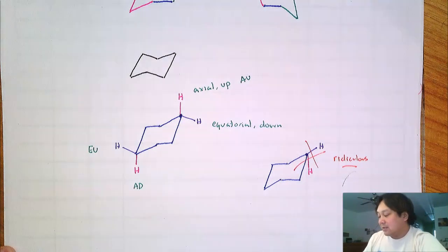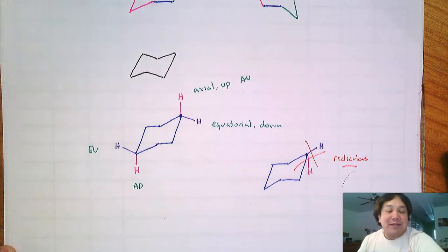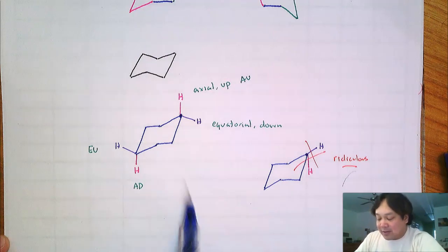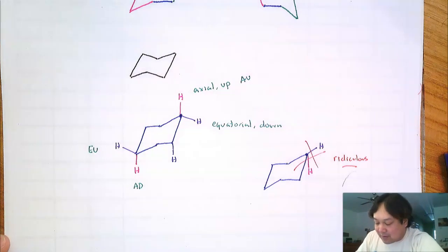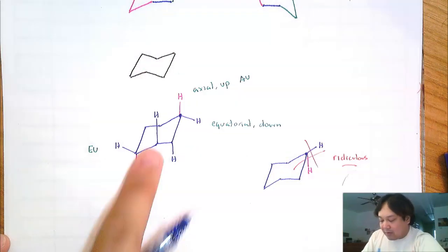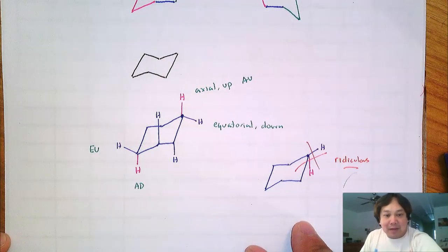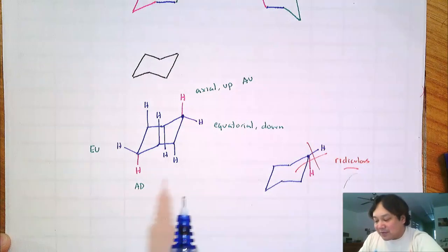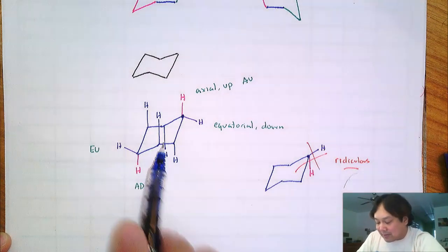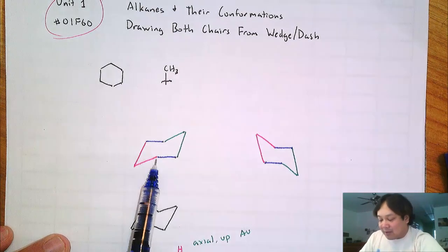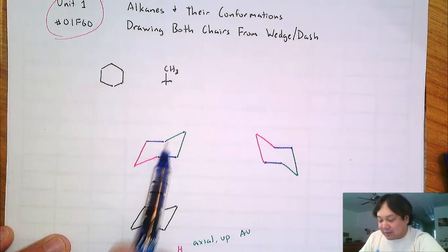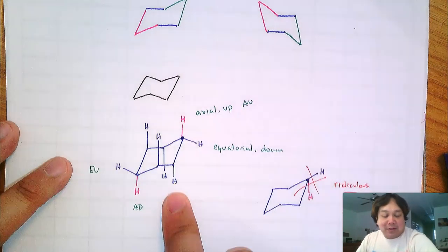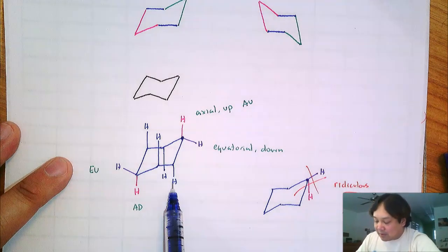So each of these carbons has two hydrogens that you need to describe. Those are the two easiest carbons to draw hydrogens for. Once you have those situated, hit all the other axials, because they alternate: axial up, axial down, axial up, axial down. There are six axial hydrogens total — one on each carbon.